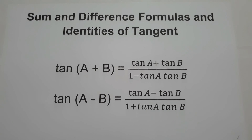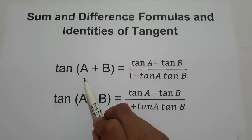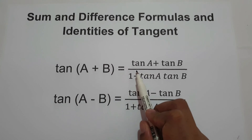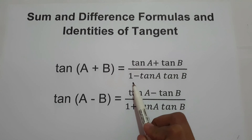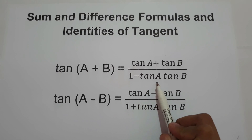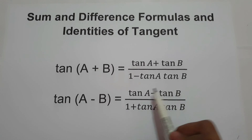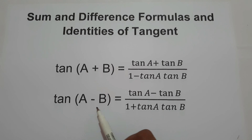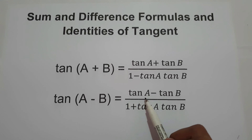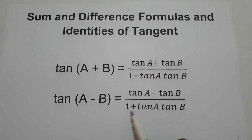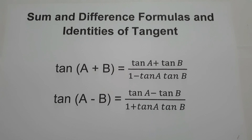There are two formulas that we need to remember when talking about the sum and difference formulas of tangent. The first one is tangent(A+B) = (tan A + tan B) / (1 - tan A · tan B). The second one is tangent(A-B) = (tan A - tan B) / (1 + tan A · tan B). These are the formulas we need to find the exact value of trigonometric expressions.